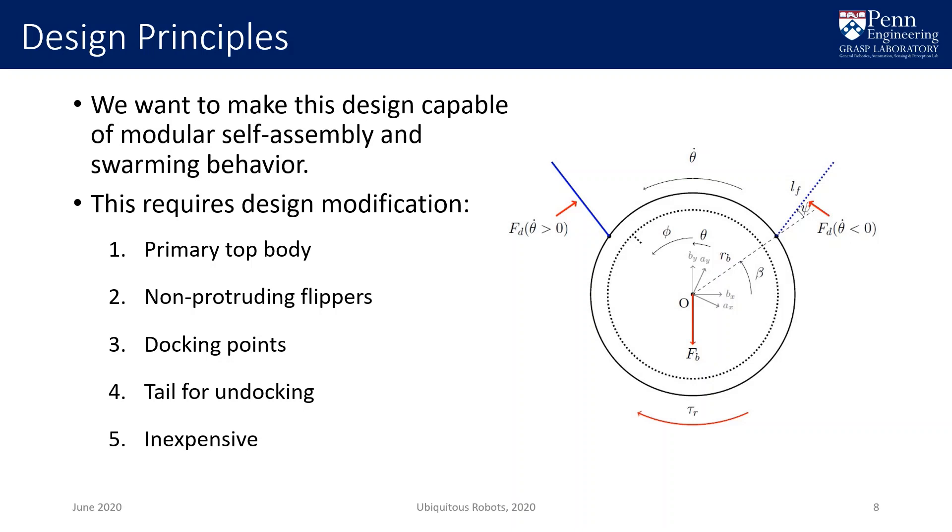This design is not capable of modular self-assembly or swarming because all of its components rotate and the protruding flippers create interference between neighboring units. To facilitate modular behavior, we introduce the following design changes. The driving mass becomes a separate larger top body, and we consider it the primary body. The flippers are designed to not protrude from the profile of the larger top body, and docking points are added to the exterior of the top body. These three points together allow swarming and self-assembly. Docking to the top body does not prevent propulsive rotation of the bottom body, and the non-protruding flippers cannot mechanically interfere with neighboring units.